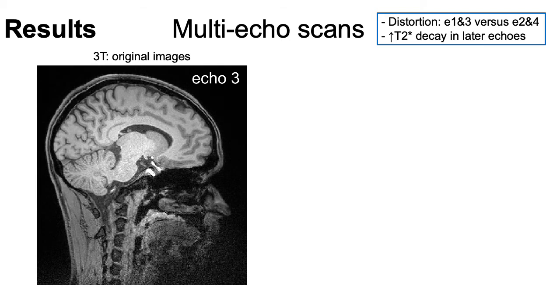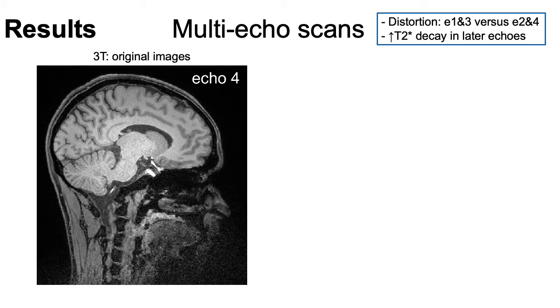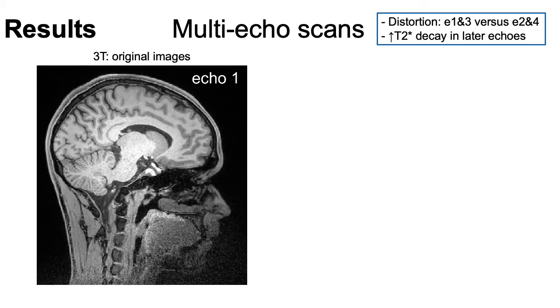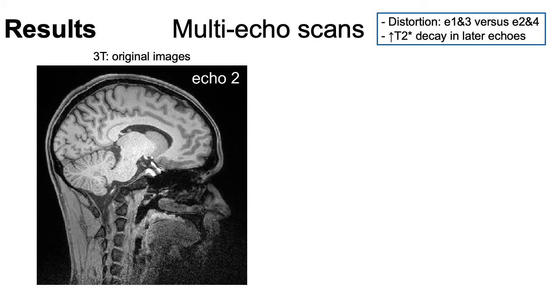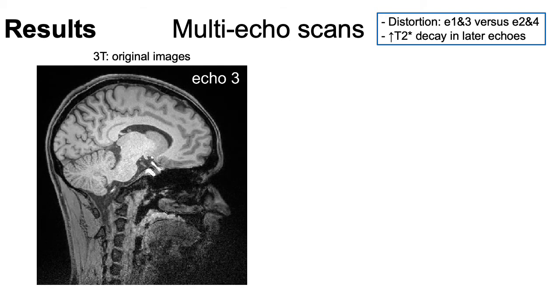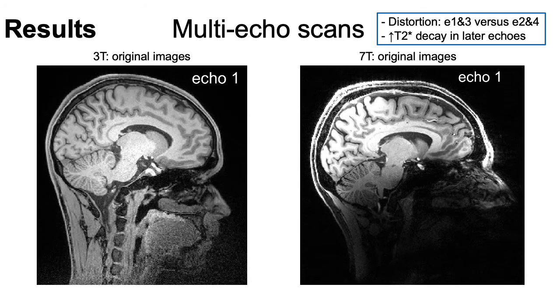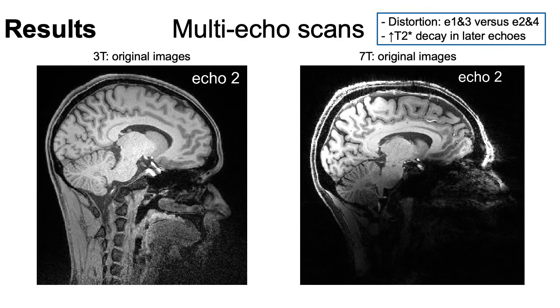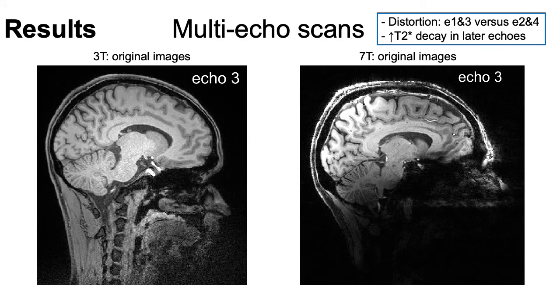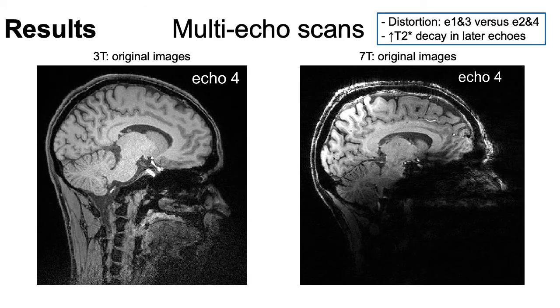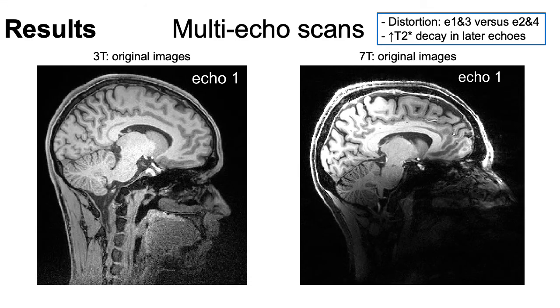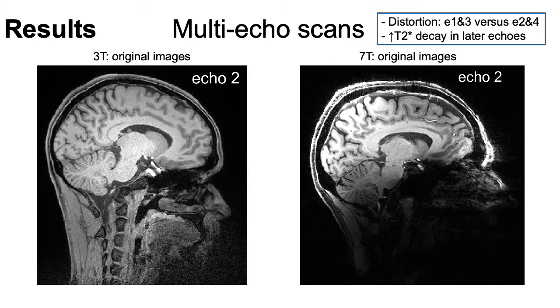In multi-echo scans we have opposite distortion between the odd and the even echoes, and also increasing T2* decay in the later echoes, which is more apparent in the 7T images here.